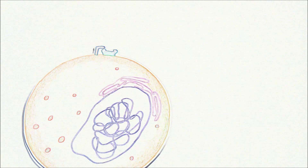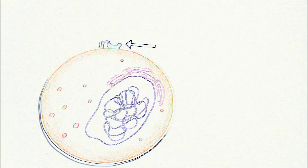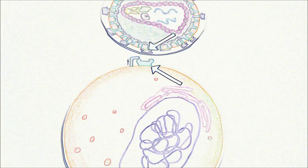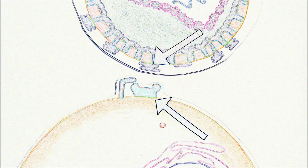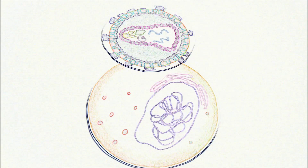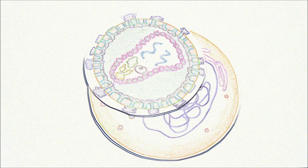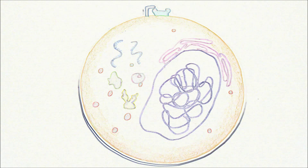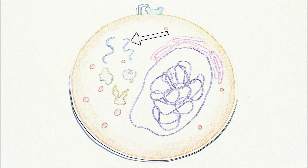Entry of the virus into the cell is made possible by receptors on the surface of T-cells, which interact with glycoprotein complexes embedded in the viral envelope. The viral envelope fuses with the cell membrane, and the virus deposits its genetic material and replication enzymes into the host cell.